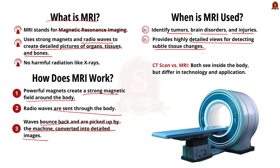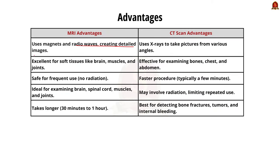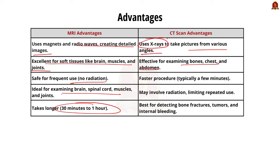We might also have heard about CT scan, which stands for Computed Tomography Scan. Both MRI and CT scans are used to see inside the body, but they work differently and are used for different purposes. MRI uses magnets and radio waves, providing very detailed images especially good for soft tissues like the brain, muscles, and joints. It is safe for frequent use as it does not involve radiation, but takes longer — usually around 30 minutes to 1 hour. CT scans use X-rays to take pictures from different angles. They are good for seeing bones, the chest, and abdomen. CT scans are faster, usually taking only a few minutes, but they use radiation and are not safe for repeated use. CT scans are best for detecting bone fractures, tumors, and internal bleeding.